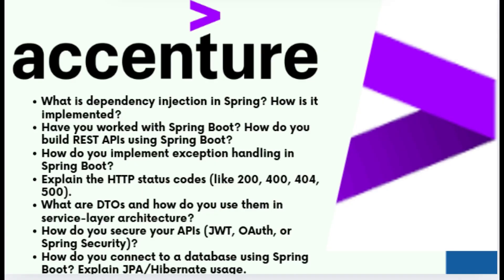The next question was: how do you secure your API? You can use JWT or Spring Security. I used JWT (JSON Web Token) for token-based authentication. After login, the server returns a token, and the client sends it in the Authorization header for further requests, with the server verifying the token using Spring Security. You can also mention OAuth2 for enterprise-level apps.